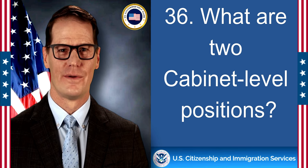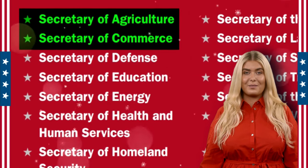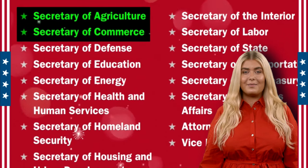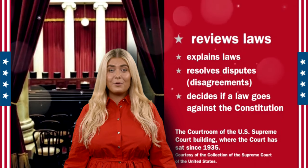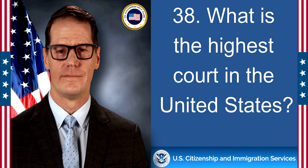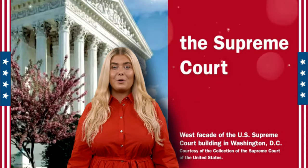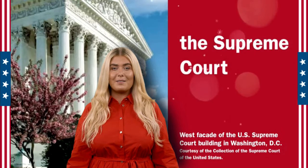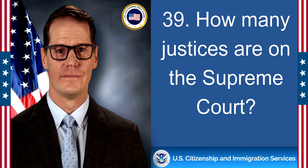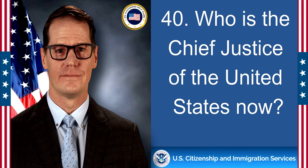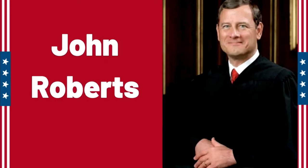What are two cabinet-level positions? Secretary of Agriculture, Secretary of Commerce. What does the judicial branch do? Reviews laws. What is the highest court in the United States? The Supreme Court. How many justices are on the Supreme Court? Nine. Who is the chief justice of the United States now? John Roberts.